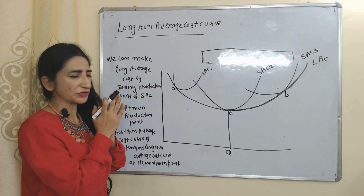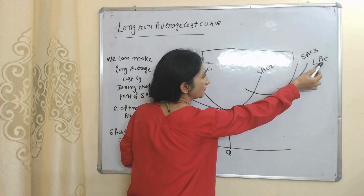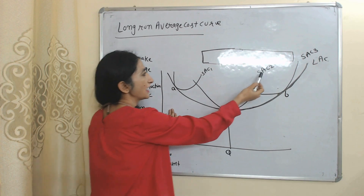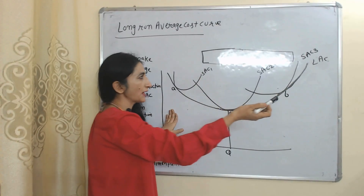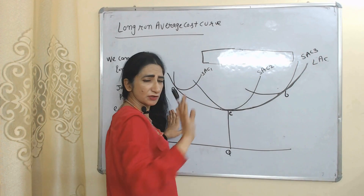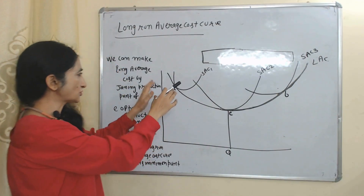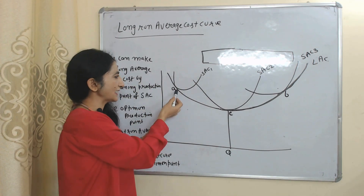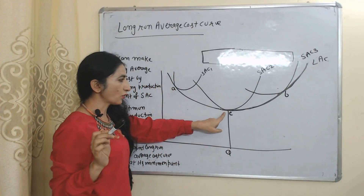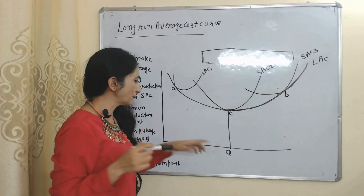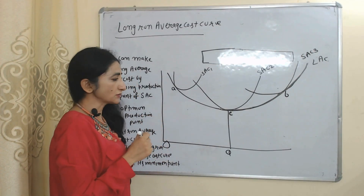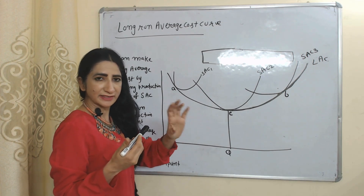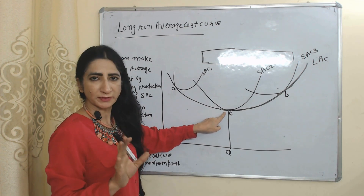Now we will look at the long-run average cost curve. LAC represents the long-run average cost curve. SAC1 is the short-run average cost curve of the first plant, SAC2 of the second plant, and SAC3 of the third plant. We draw the long-run average cost curve by joining production points of short-run average cost curves — points A, E, and B. E is called the optimum production point and OQ the optimum output, because at point E, the short-run average cost curve touches the long-run average cost curve at its minimum point.